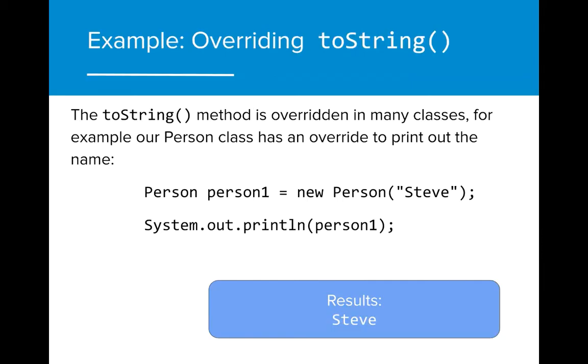There are many examples where the toString method is overridden. For example, in our person class, we override the toString method to return the name of the person.